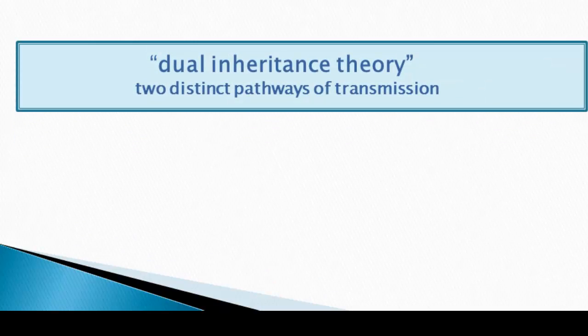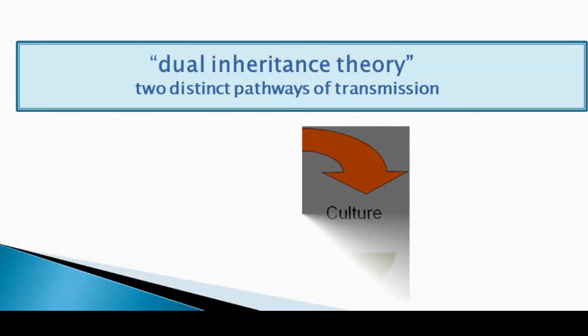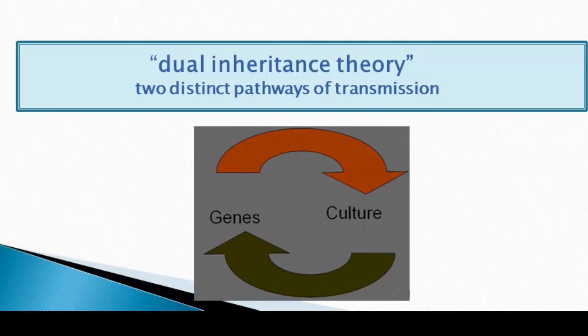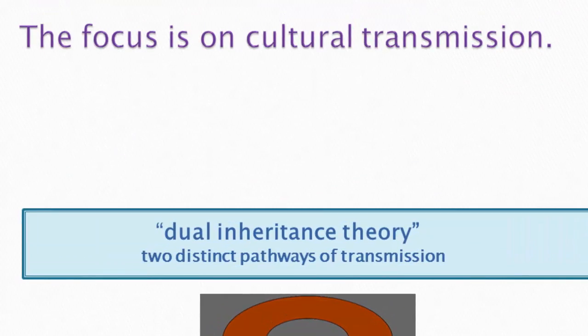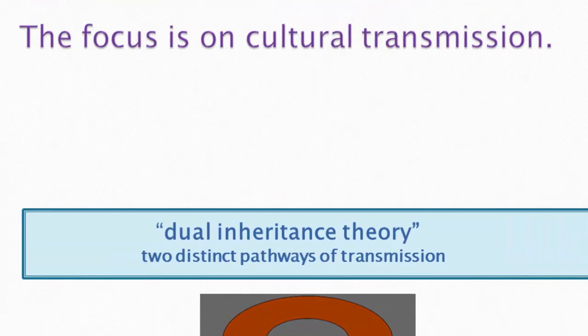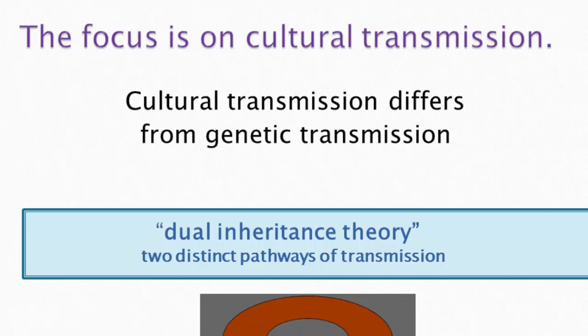Dual inheritance theory posits two distinct pathways of transmission — genes and culture — interacting. The focus has been on cultural transmission. Social scientists have long argued that cultural transmission differs from genetic transmission, and there's basic agreement on three key differences.